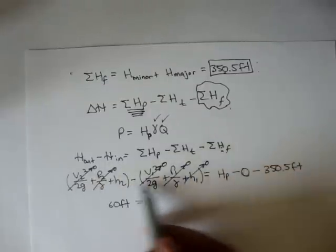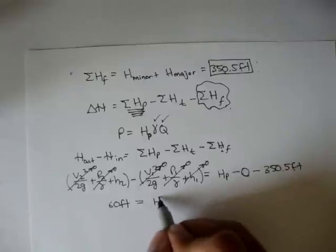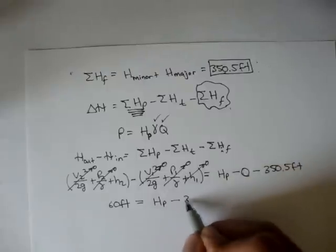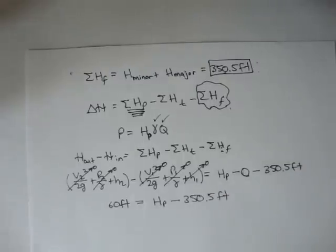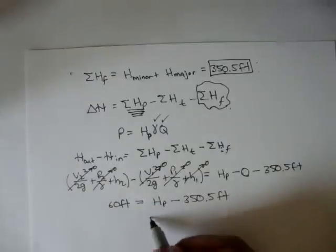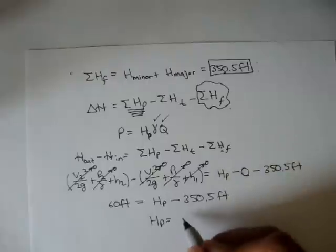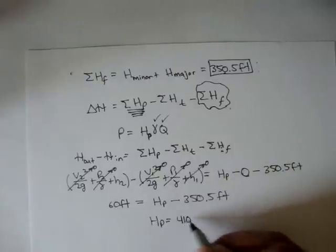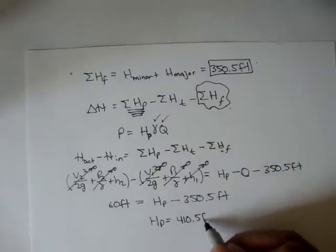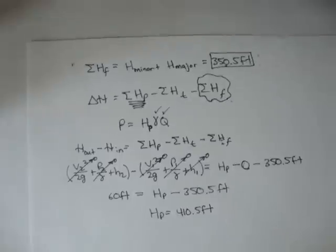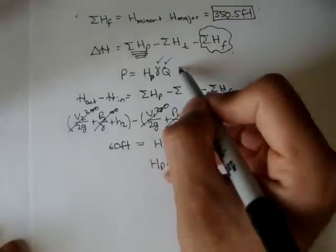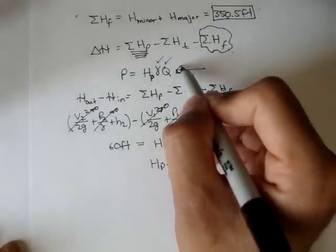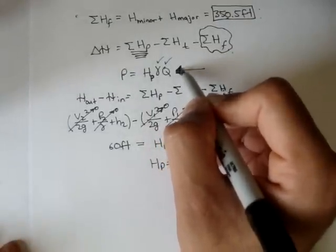So we'll say 60 feet, which is all of this, is equal to the pump head minus 350.5 feet. And if we solve this out for the pump head, we get HP is equal to 410.5 feet.